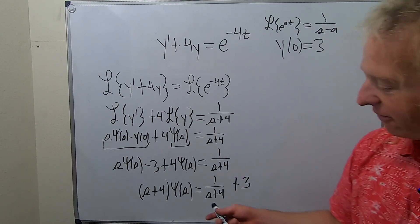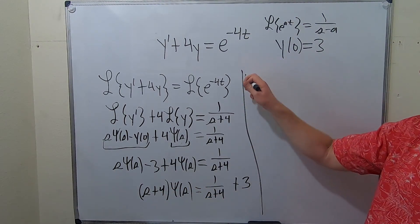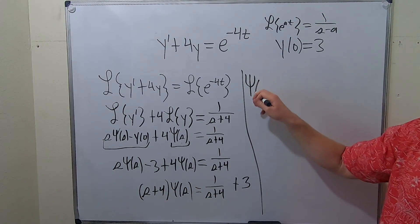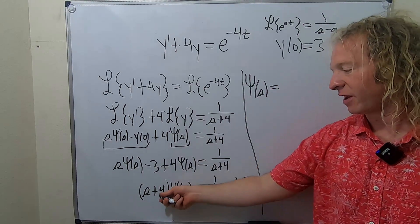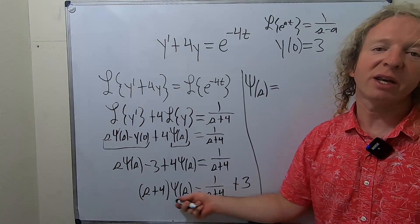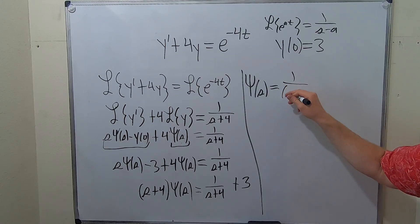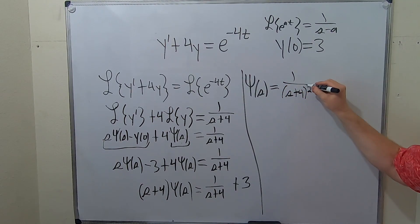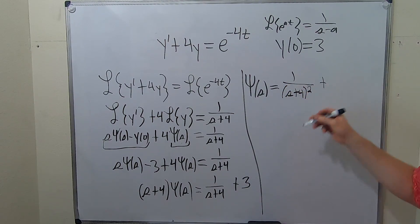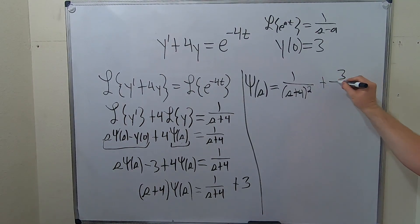The next step is to divide everything by s plus 4. So ψ(s) equals 1 over (s plus 4) squared, plus 3 over (s plus 4).